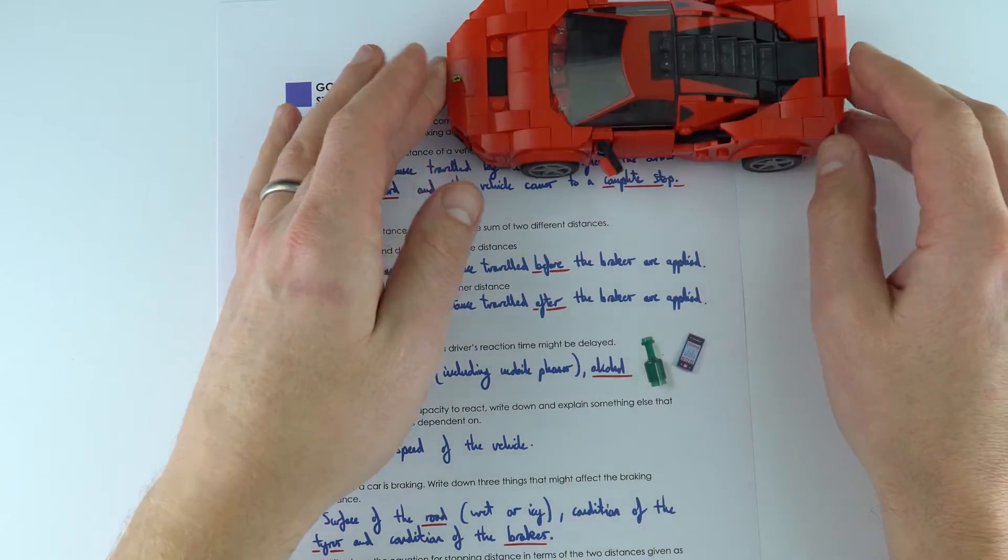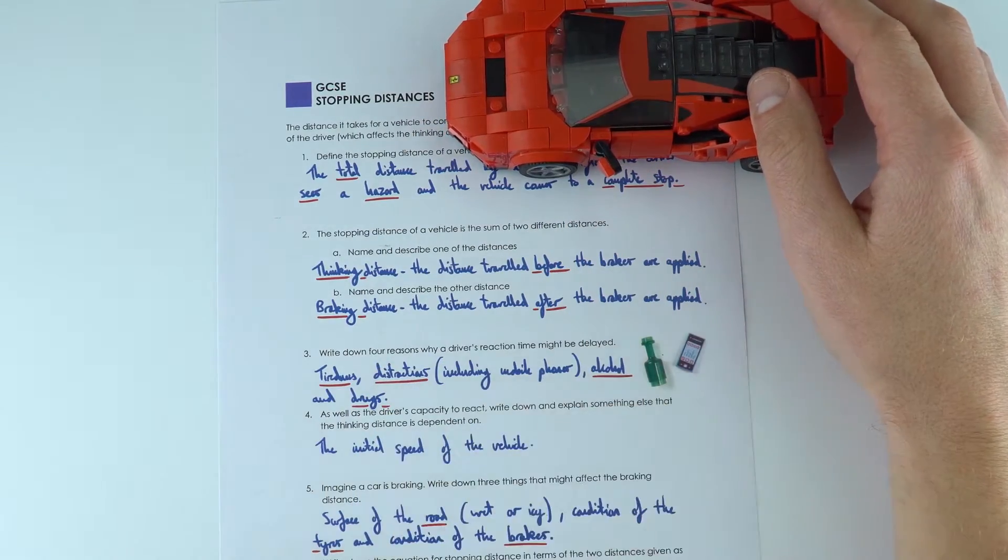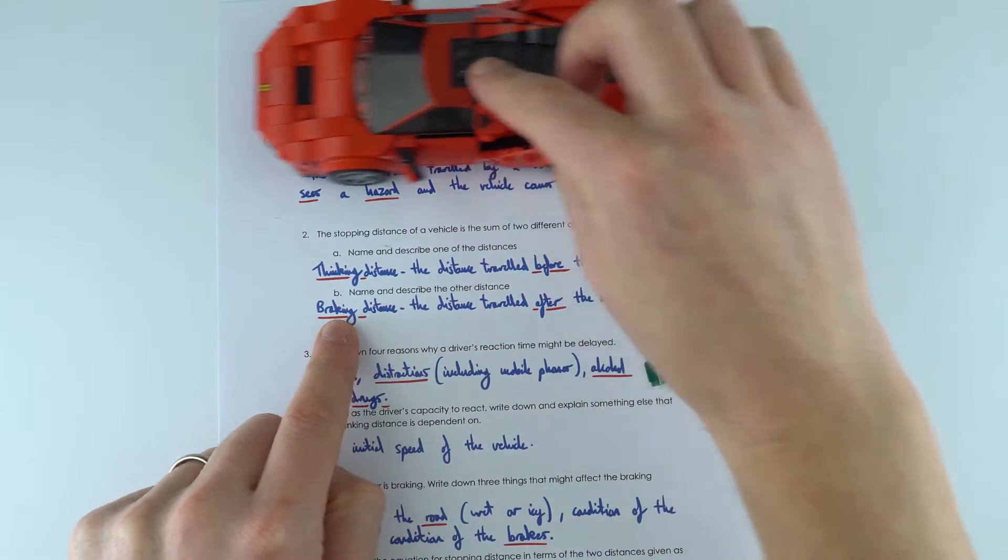You've got the thinking distance, which is before the brakes are applied, and then once the brakes have been applied, we're looking at the braking distance.